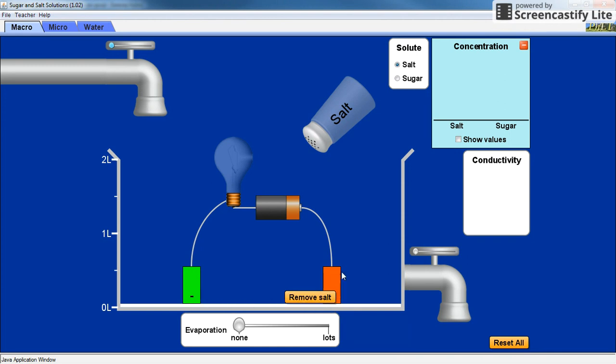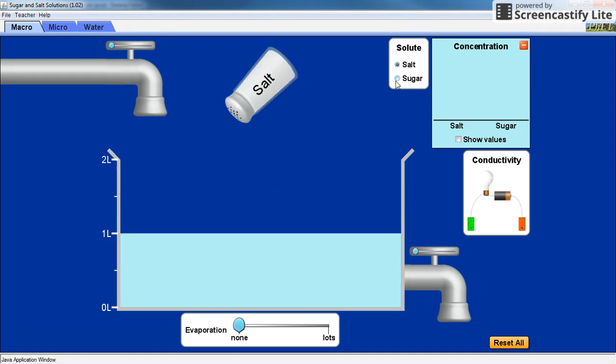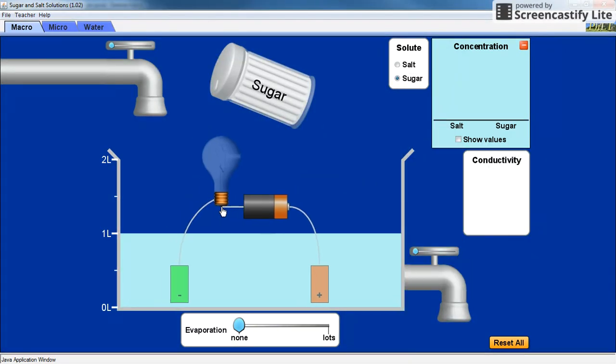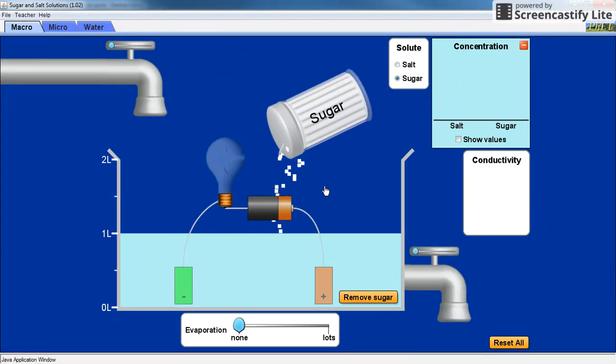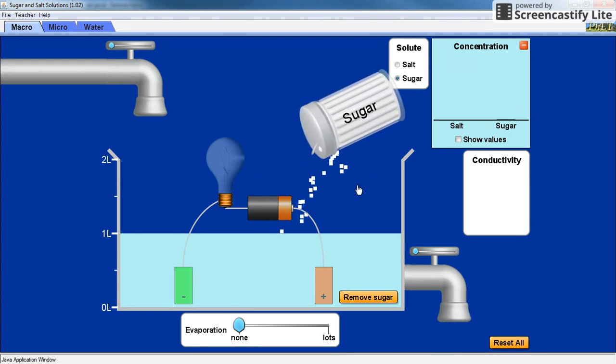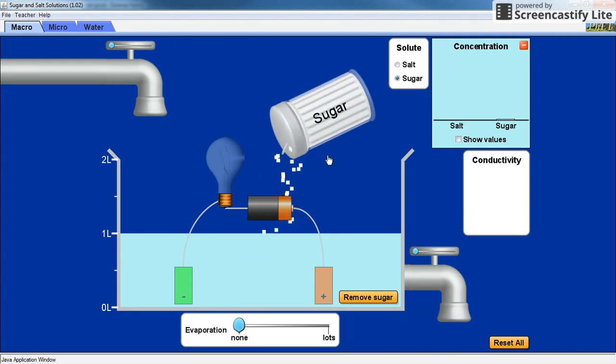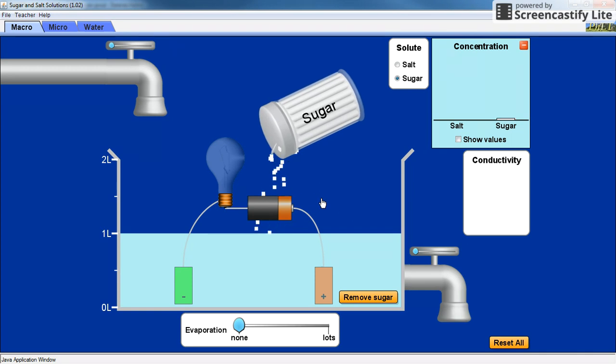So think about that. I can now reset all and look at the sugar. Again I use my conductivity tester and I add sugar. Notice as I add sugar my concentration of the sugar will slowly increase, but my light bulb is not working.